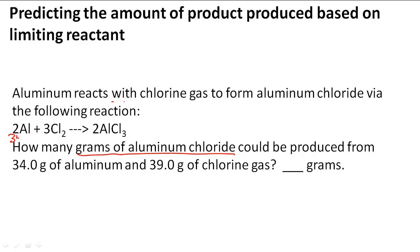We have 34.0 grams of aluminum and 39.0 grams of chlorine gas. What we have to do is figure out the moles and then figure out what the requirements for the moles are.